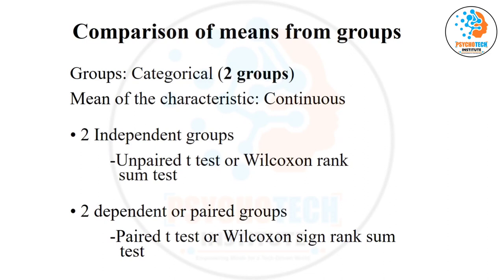We use an unpaired t-test when the data follow a normal distribution. There are sub-conditions: is the continuous variable normally distributed? Does the categorical variable have two or more categories? Is the data paired or not? If normally distributed with two unpaired categories — unpaired t-test. If not normally distributed with two categories — Wilcoxon rank-sum test.